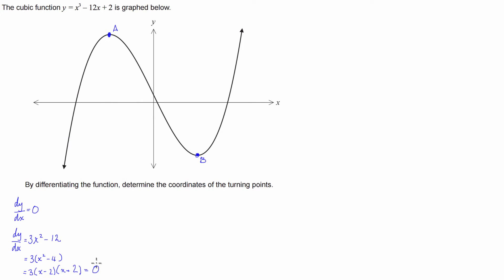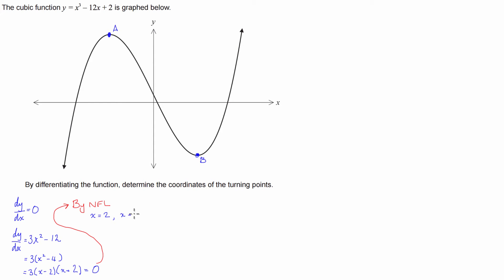So what we can then do is we can use what's called the null factor law, which basically states if you've got two numbers which are being multiplied together and they equal 0, at least one of them has to be equal to 0. So by the null factor law, either x minus 2 equals 0 or x plus 2 equals 0, meaning x will have to equal positive 2 or x will have to equal negative 2.